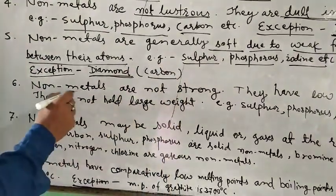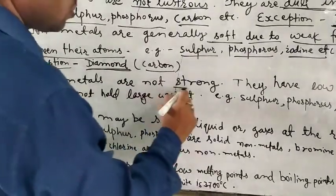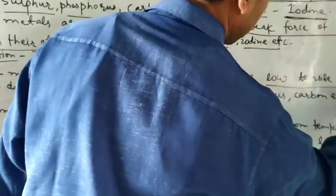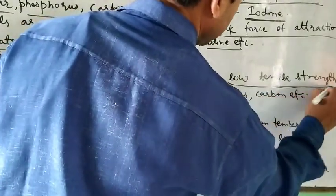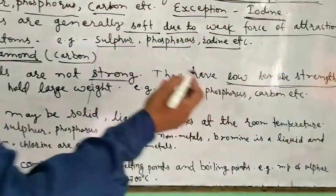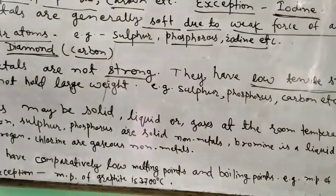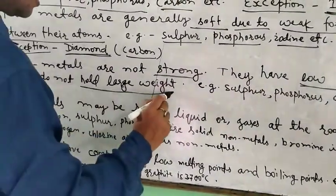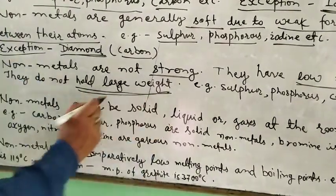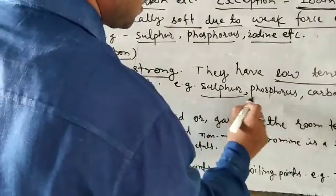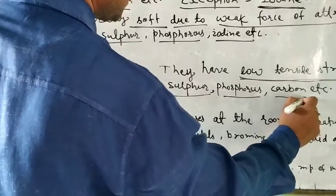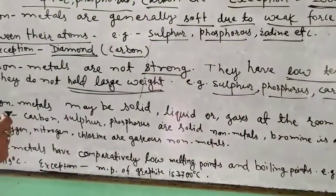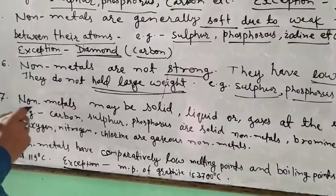The next point is that non-metals are not strong — that means they have low tensile strength. Low tensile strength means low load-bearing capacity; they do not hold large weights without breaking. For example, sulfur, phosphorus, carbon etc. do not hold large weights.